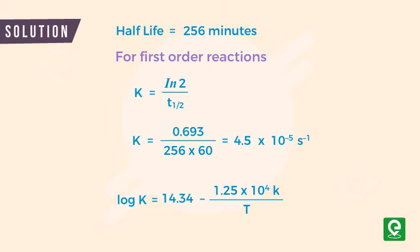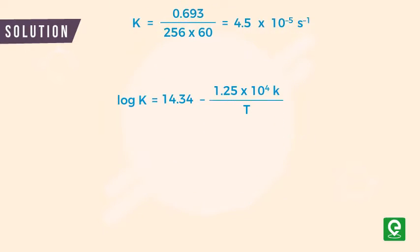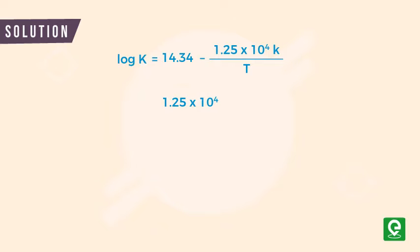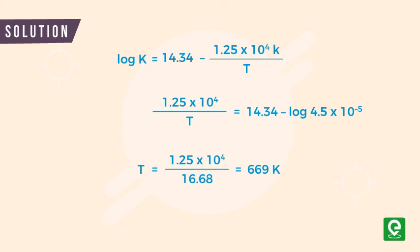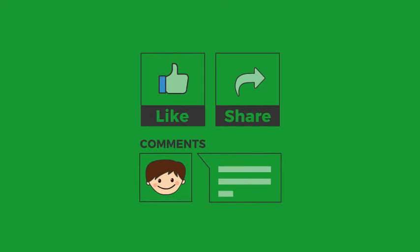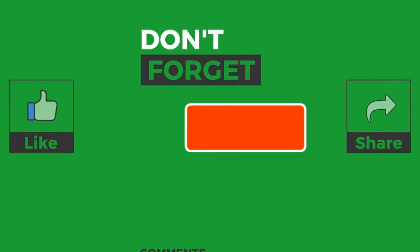Substituting this value of K in the given equation, we get 1.25 times 10 to the power 4 by T is equal to 14.34 minus log of 4.5 times 10 to the power minus 5. On simplifying, we get T equal to 669 K. Please like, share, and comment on the video, and don't forget to subscribe to our YouTube channel for more interesting and educational videos.